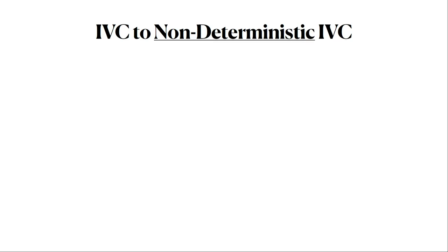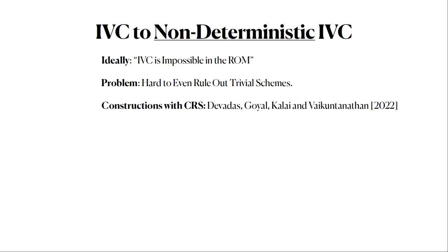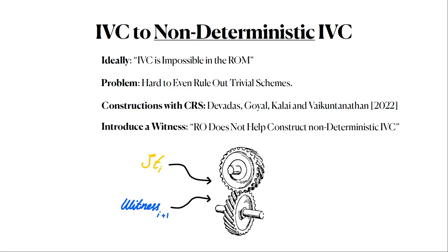The first thing is that I've been promising too much. I can't really say that much about IVC itself, but I can say something about non-deterministic IVC, which was also the version of IVC that was described in the previous talk. Ideally we would not say something strong like this, but the problem is that it's hard to even rule out trivial schemes that don't even query the random oracle. Indeed, there is even construction with CRS from somewhere statistically binding hash functions.